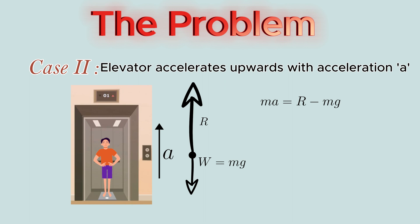By transposing, we can easily get normal reaction as R = mg + ma. Therefore, the normal reaction is now increased, and the weighing machine will read out a higher weight than the actual weight of the man.